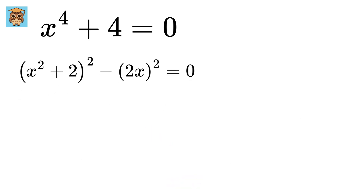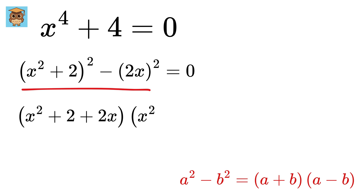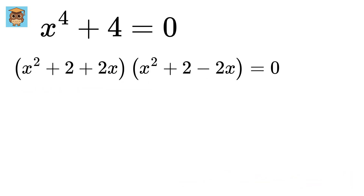Now, this seems familiar — it is of the form a² minus b², which factors as (a+b)(a-b). So this equation will be (x² + 2 + 2x)(x² + 2 − 2x) = 0. Now we just have to solve these two quadratic equations.